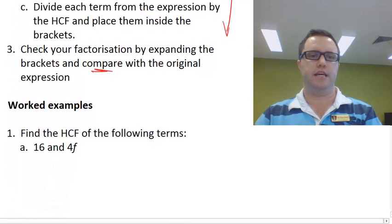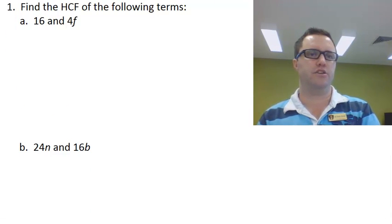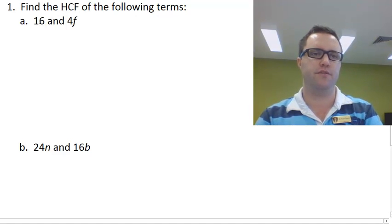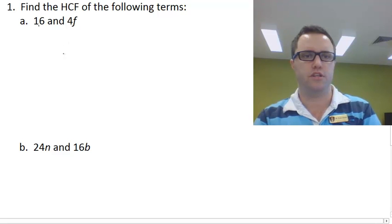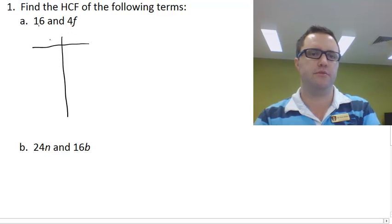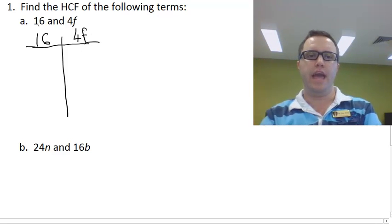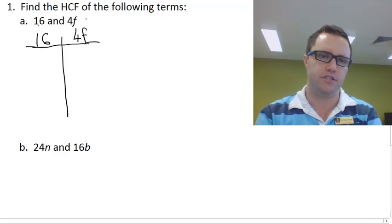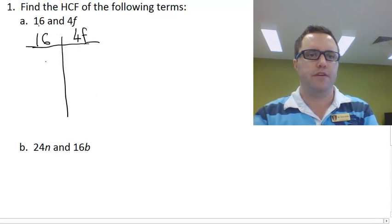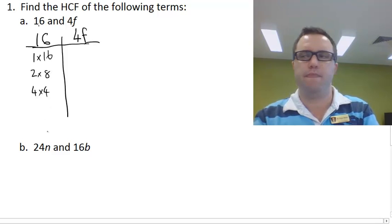We're going to have a look at some worked examples. A couple of things you're asked in your textbook is to find the highest common factor of the following terms, 16 and 4F. There's a couple of ways to do this. I'm going to show you two different ways. The first one is to do a little highest common factor table like we did in Term 1. So 16 is going to be on this side and 4F is going to be on this side. Remember that F is a factor, it's a part of this term that's multiplied together. So we have 1 times 16, 2 times 8, 4 times 4.